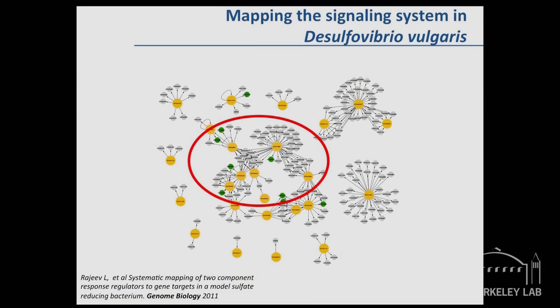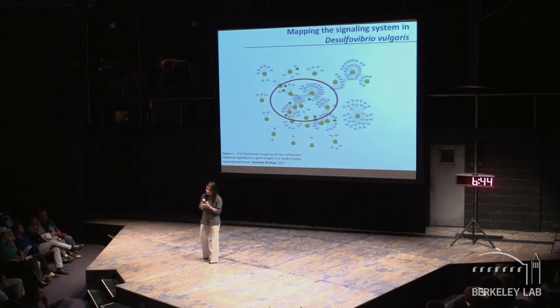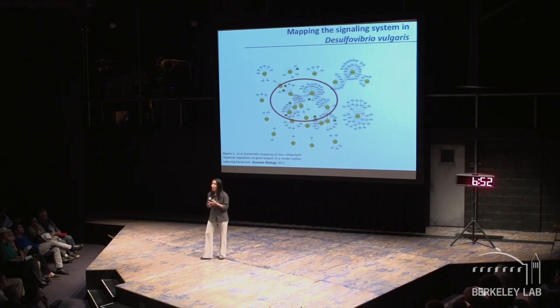Any one of these signaling systems could be something someone like me could study my entire life and still not understand fully. So we simply don't have the time to study them one at a time. So what we did is we devised a strategy to figure out as much as we could about the signaling systems in one fell swoop. And in two years, we managed to predict all the genes that are controlled by all the signaling systems in Desulfovibrio.